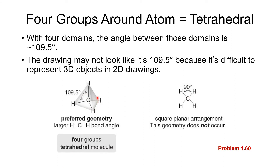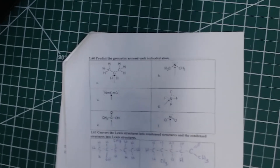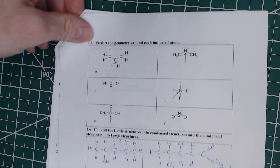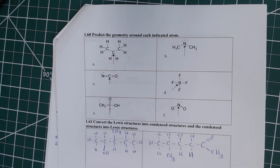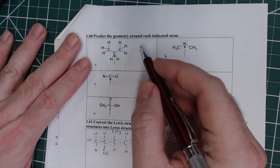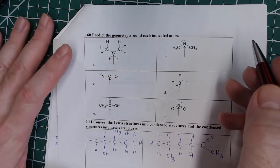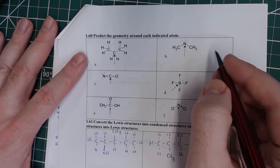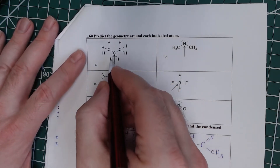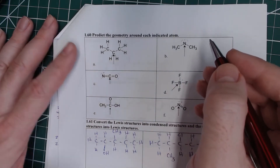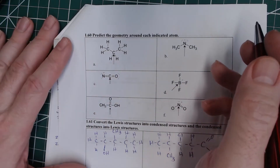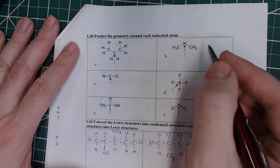Let's look at number 60 on the in-class assignment. We want to predict the geometry and write the associated angle. To do this, just count the domains: if there are two, it's linear; if three, trigonal planar; if four, tetrahedral.